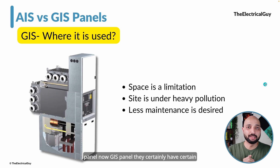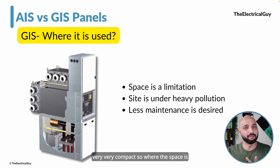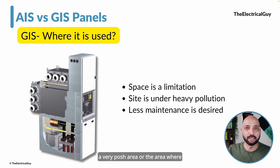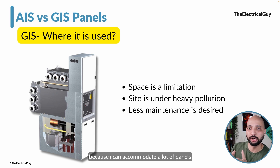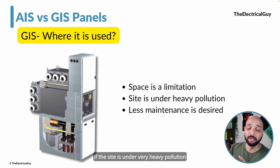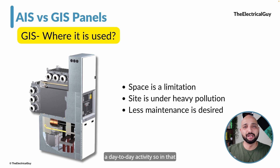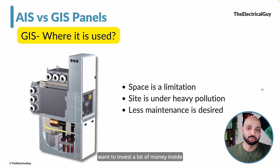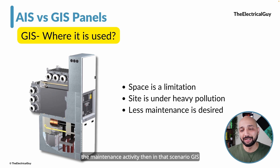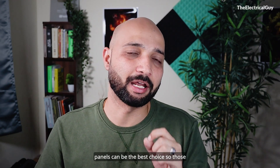GIS panels have clear advantages: they are maintenance-free and very compact. Where space is limited — for example in a posh area with high land rates — GIS is a good choice because you can accommodate many panels in a compact room. If the site is under very heavy pollution, like cement industries, GIS is better because it is sealed and the internal components are not affected by pollution. If minimal maintenance investment is desired, GIS panels are the best choice.